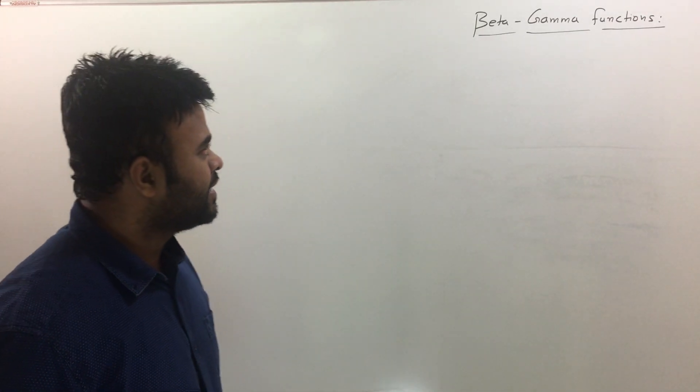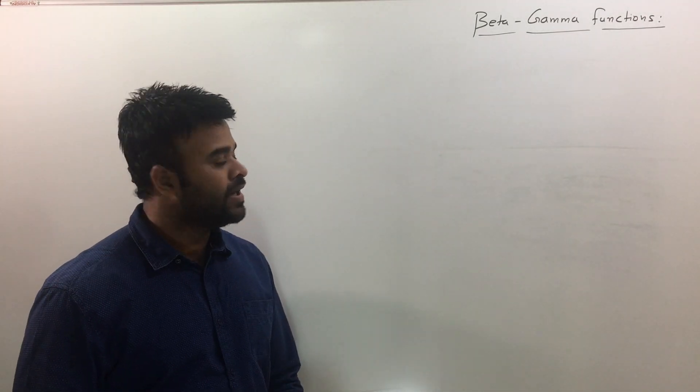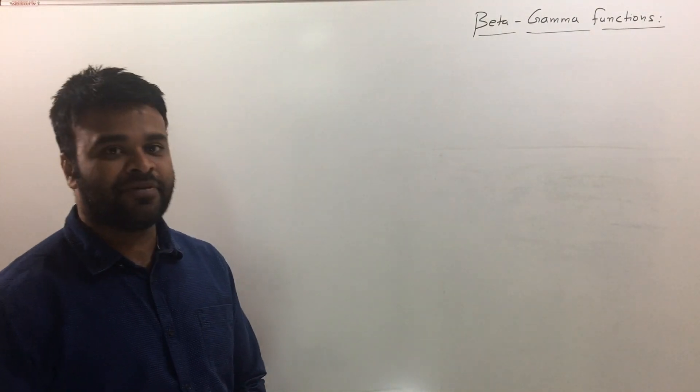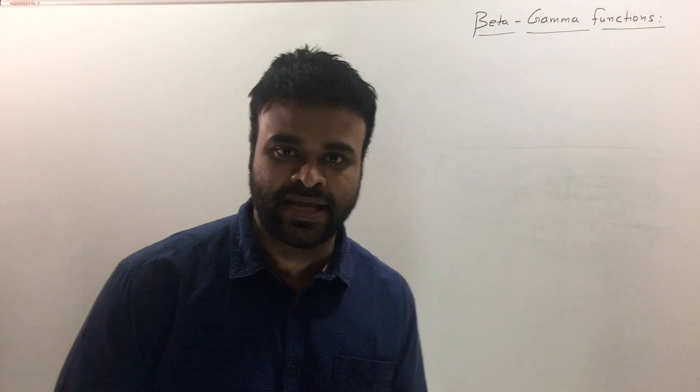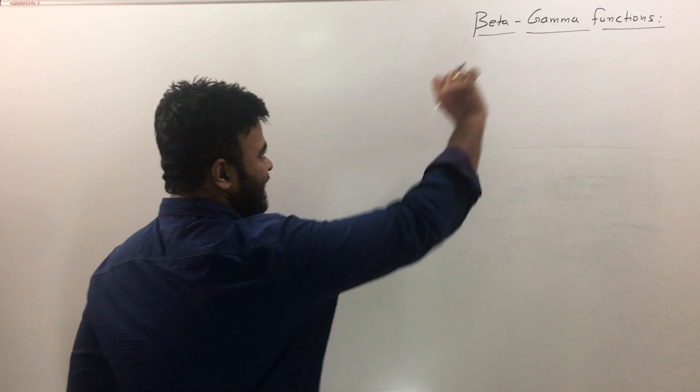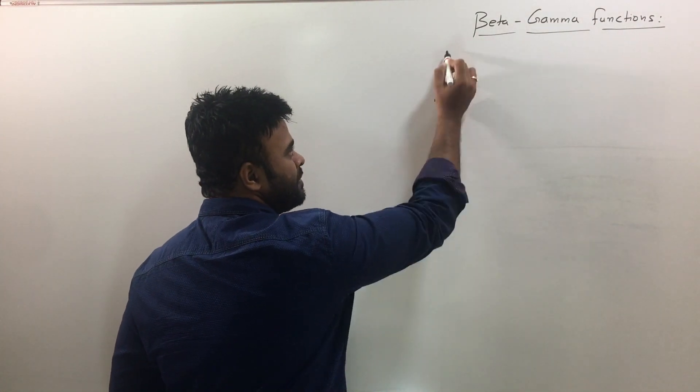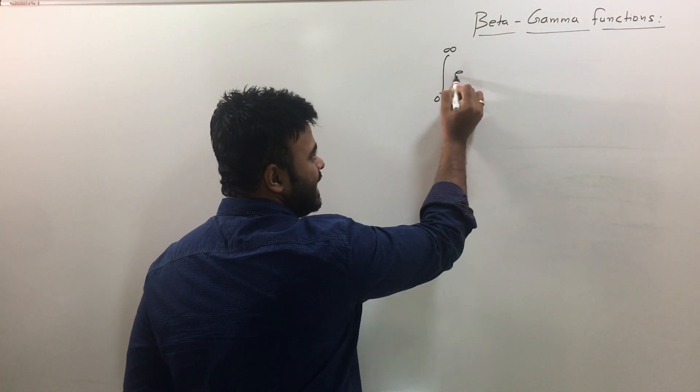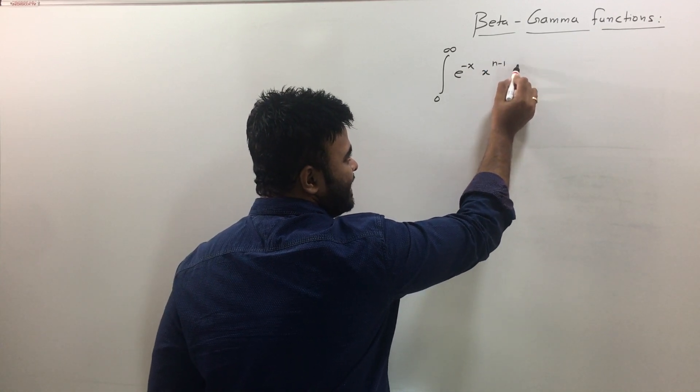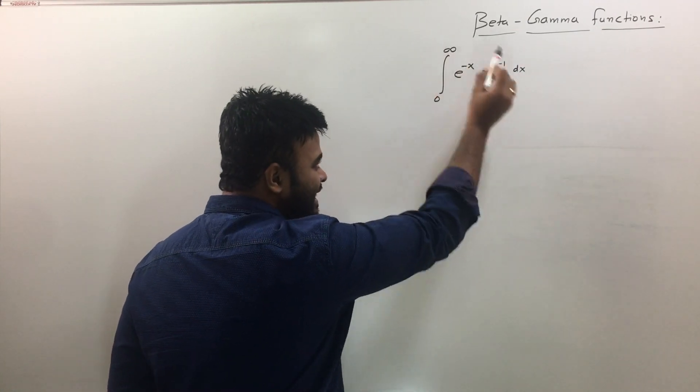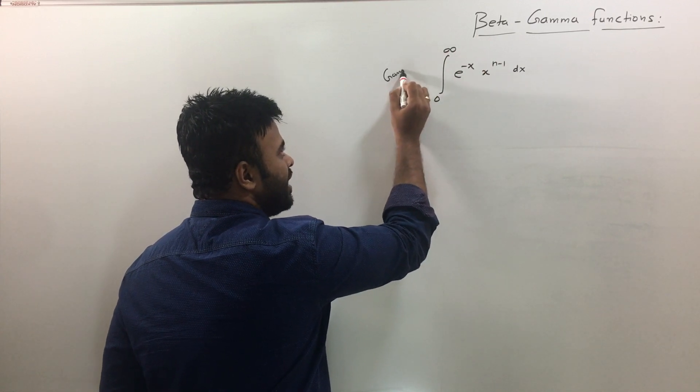So let's get started. What are beta gamma functions? Beta gamma functions are standard integrals. Let me give you the first integral here: it's an integration function going from 0 to infinity, e raised to minus x, x raised to n minus 1 dx. Now this integral is called as gamma function.